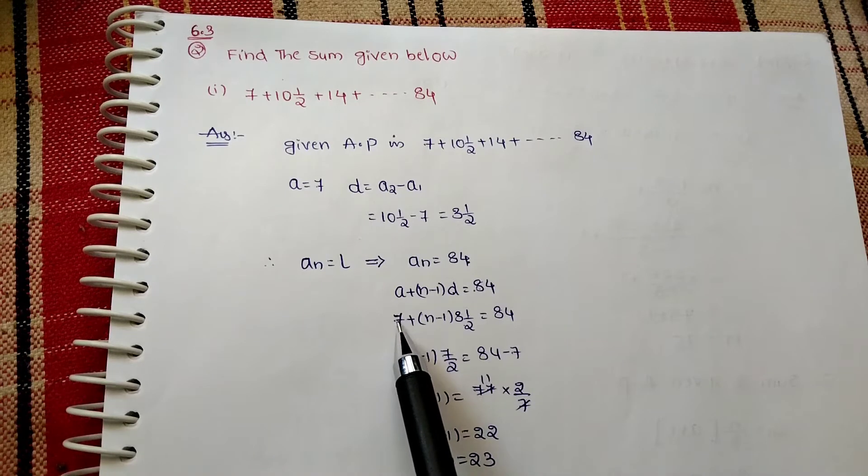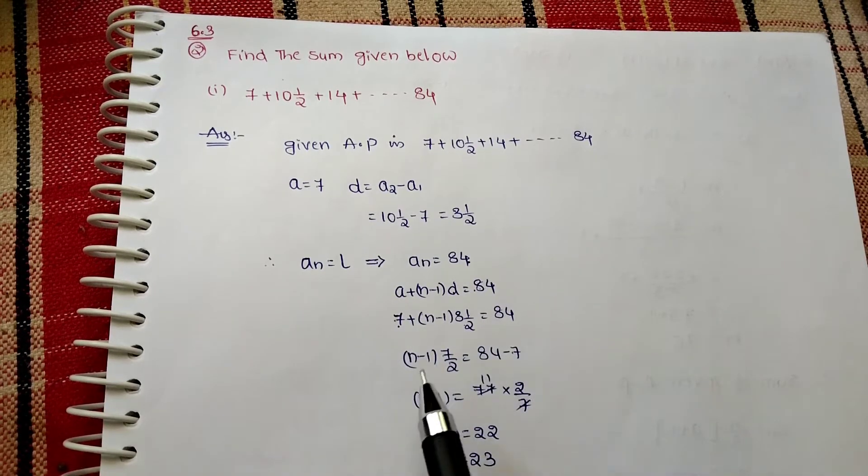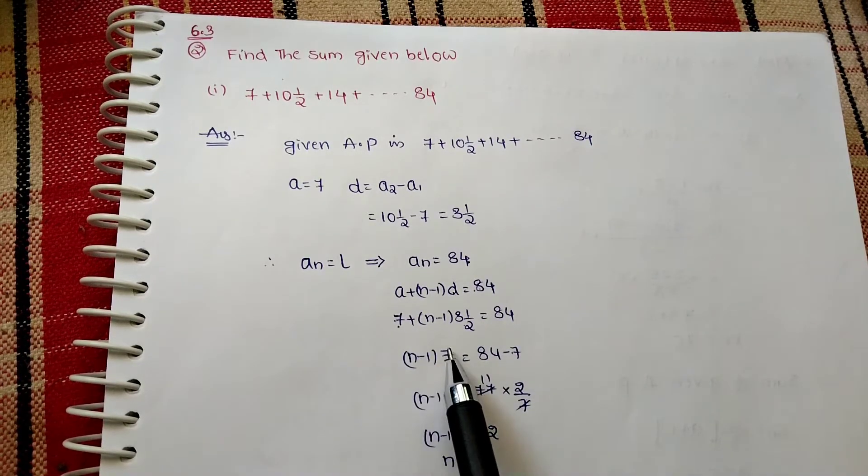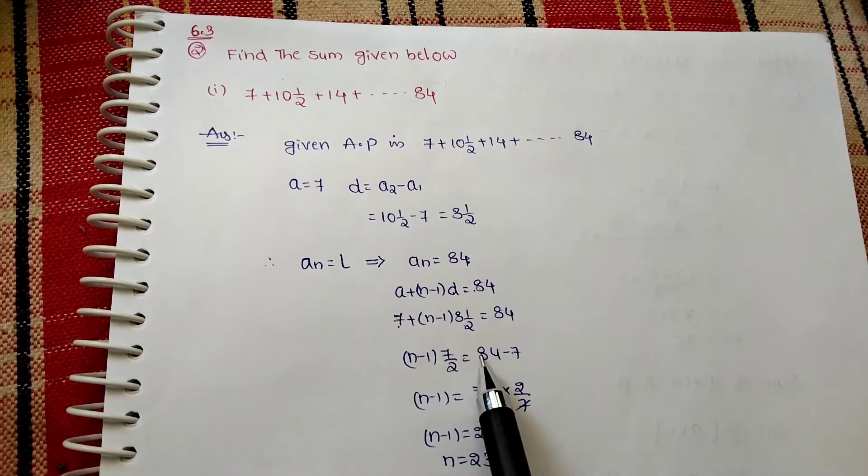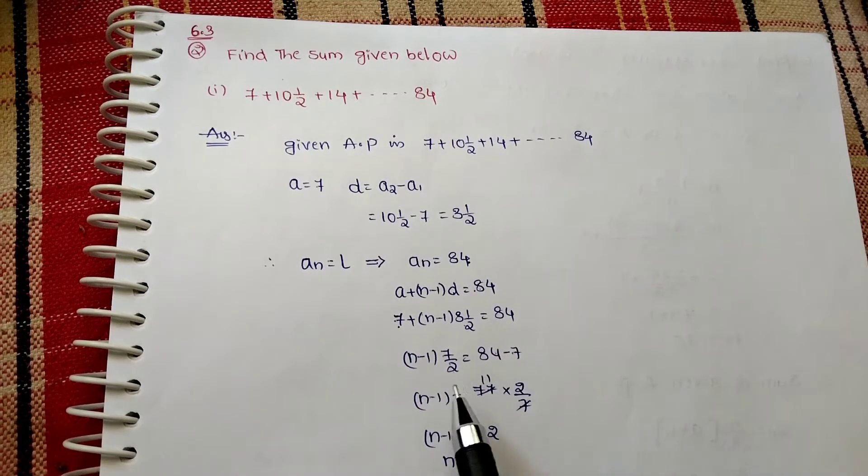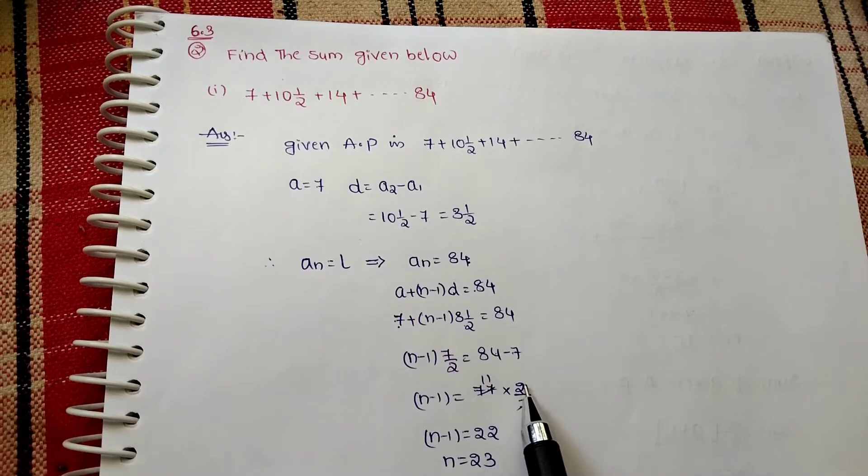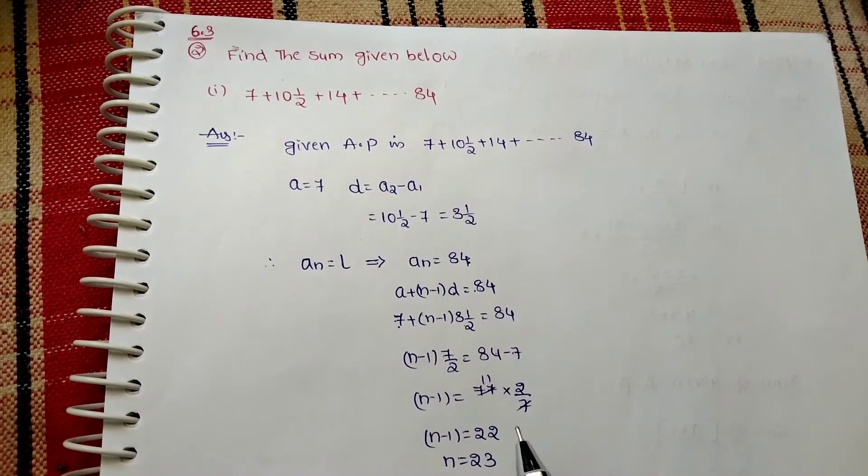Now I am taking 7 from this side. n minus 1 into 7/2 equals 84 minus 7. 84 minus 7 will be 77. Now I am taking these 7/2 from this side, right? Then what happens? n minus 1 equals 77 times 2/7.